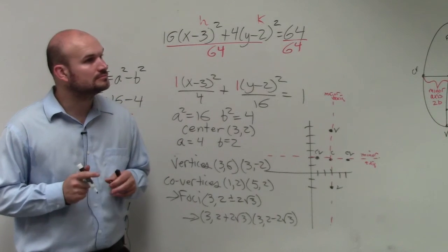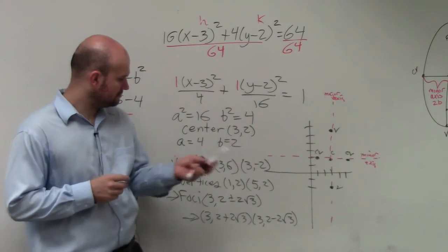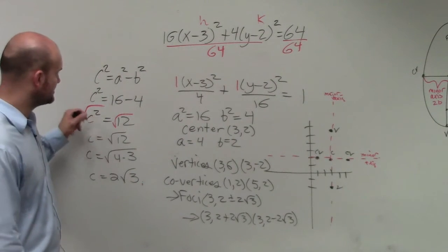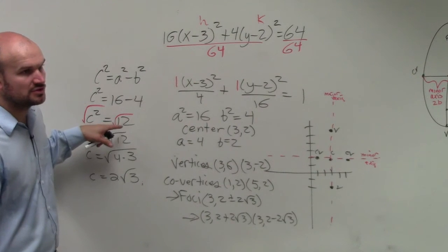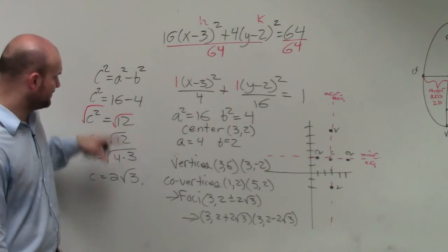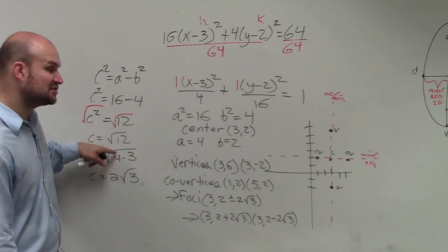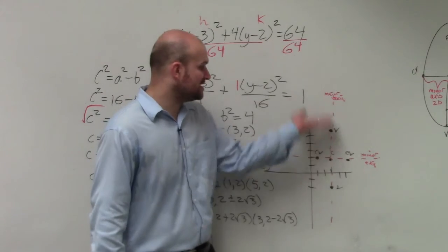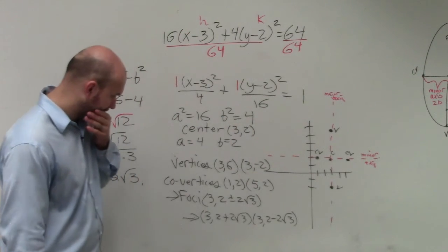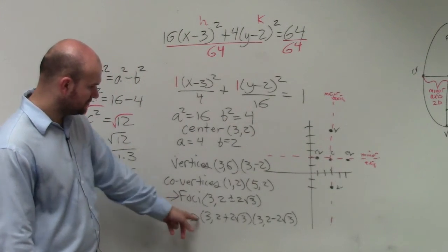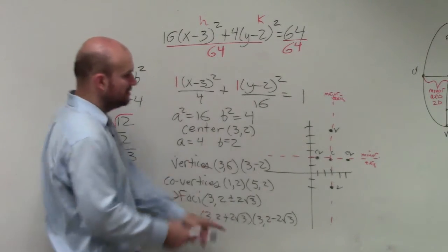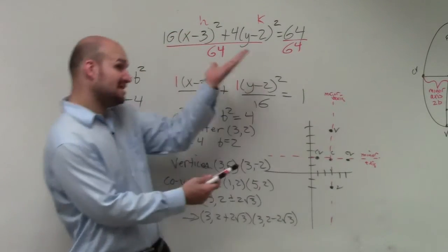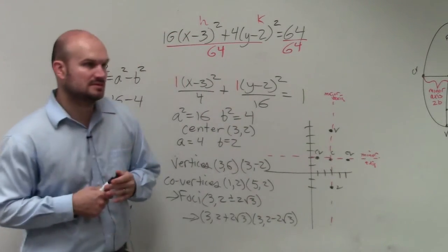Student asks: Can you go over where you got the 3 comma 2? I just simplified the radical square root of 12. 12 can be broken down into 4 times 3. I can take the square root of 4, which is 2, so it's 2 radical 3. The 3 comma 2 is your center. From the center, you're going up and down, so it's 3 comma 2 plus that and minus that.